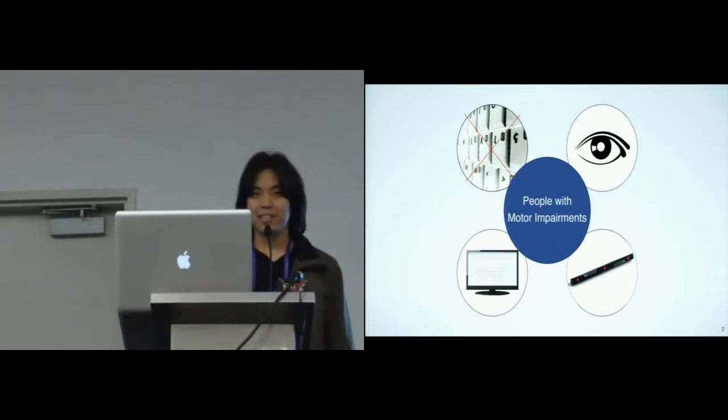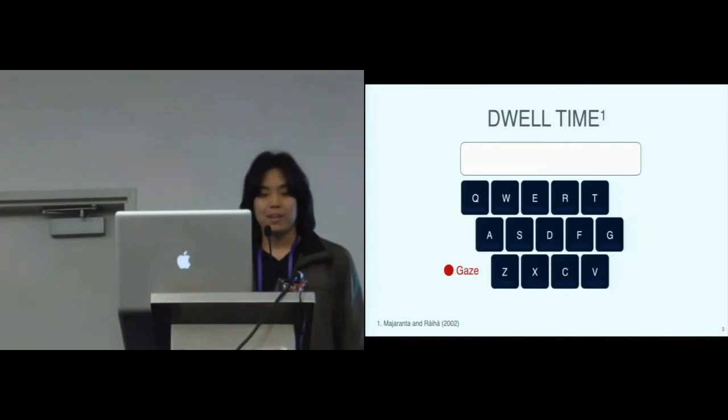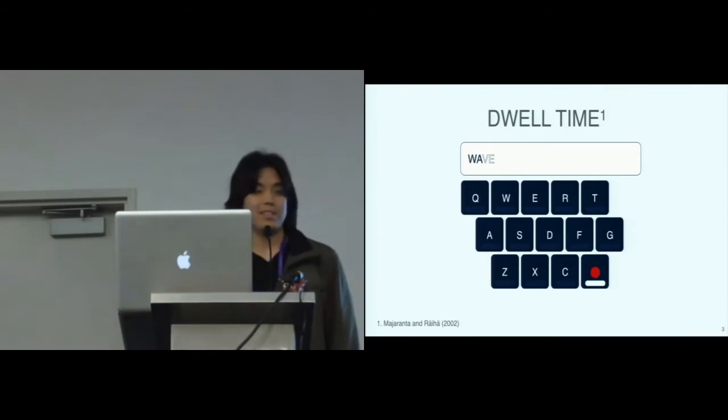One of the most common methods for eye typing is dwell time. To type a word with dwell time, the user has to fixate the desired key with her eyes for a given time to select it. The dwell time typically varies between 400 milliseconds and one second. So our question is, would it be possible to remove this wait time?